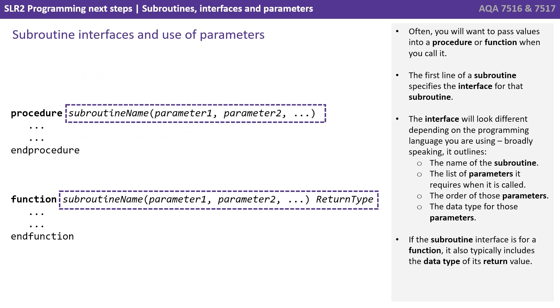Often you'll want to pass values into a procedure or a function when you call it, like we just saw with the SQRT command from the math library. The first line of a subroutine specifies the interface for that subroutine. The interface will look different depending on the programming language you're using, but broadly speaking, it outlines the name of the subroutine, the list of parameters it requires when you call it, the order that those parameters should be supplied in, and the data types for those parameters. If the subroutine interface is for a function, it also typically includes the data type of the return value.